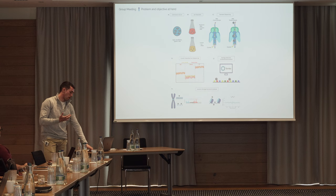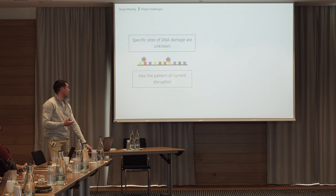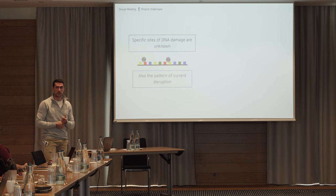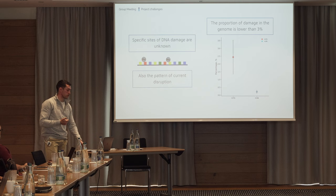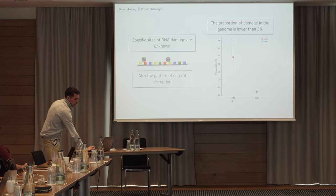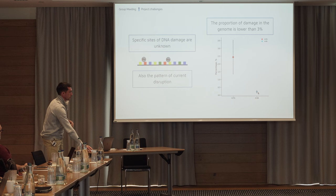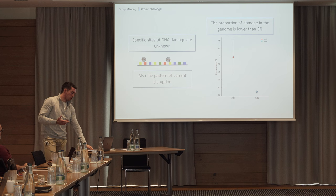However, it is a challenging question. The reason is twofold: the specific sites of damage are unknown, and the pattern of current disruption is unknown. On top of that, the proportion of damage is very low. We ran mass spectrometry analysis and saw only up to 3% of damage reads in our genome for MMS. The two most common adducts are 7-methylguanine at about 2.5% and 3-methyladenine at less than 0.5%—so very low proportions across the whole genome.